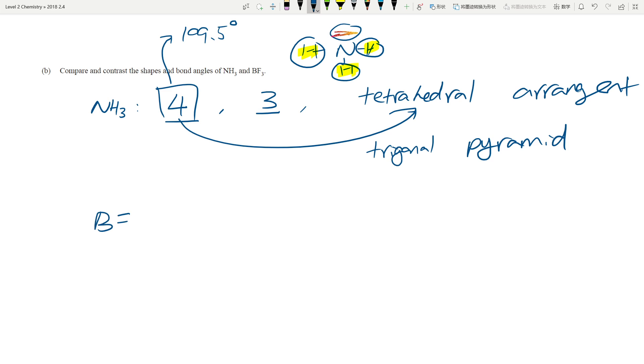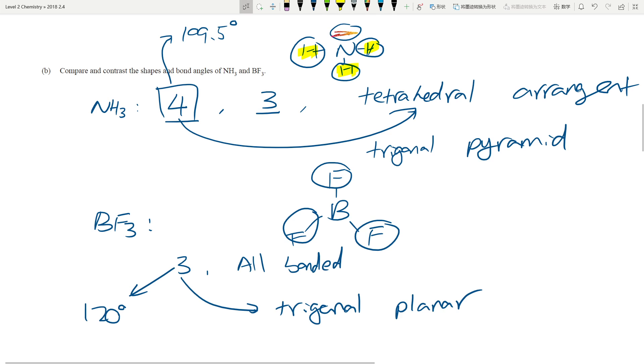If you look at BF3, BF3 is different because if you remember looking at the Lewis diagram just now, you have three regions of electron density. They're all bonded. So you've got three regions. So that means you have a trigonal planar arrangement. And because you can see all three corners, you have a trigonal planar shape. And when you have three regions of electron density, the bond angle is always going to be 120 degrees because that's as far away as they can get from each other.